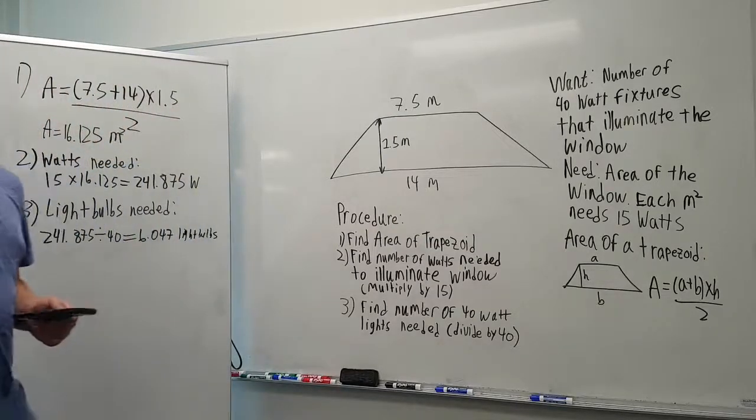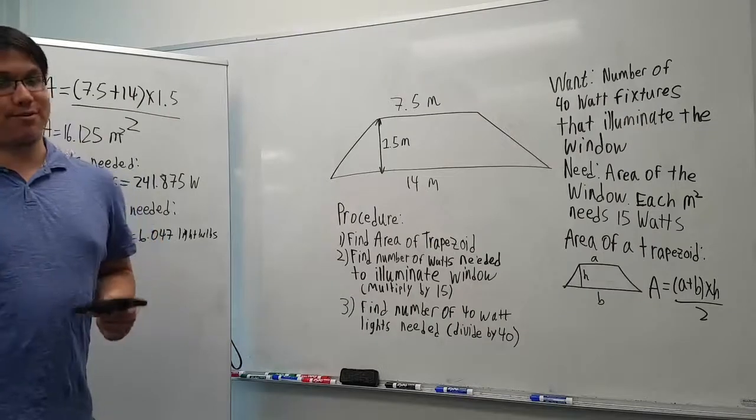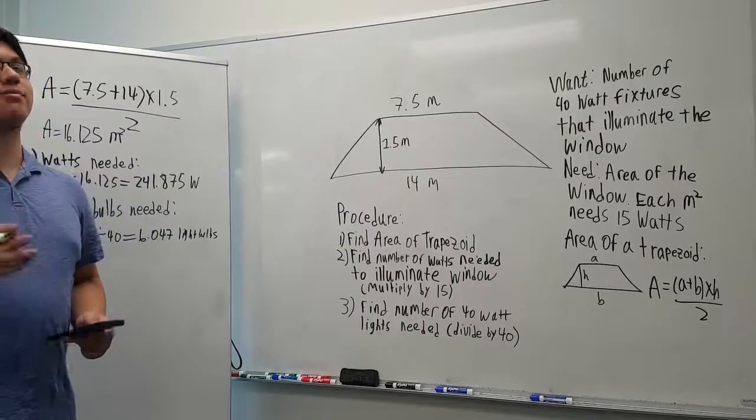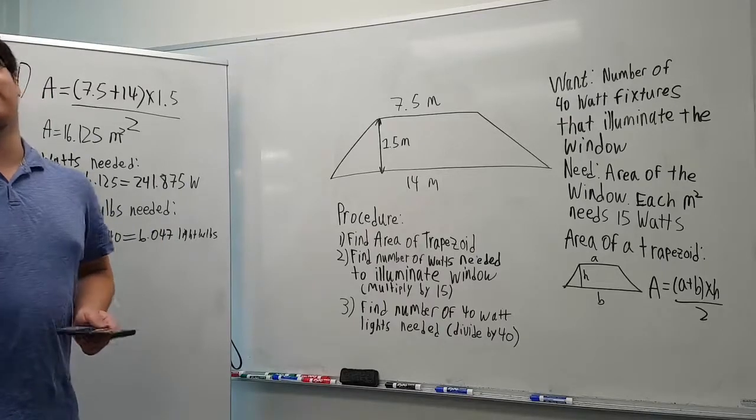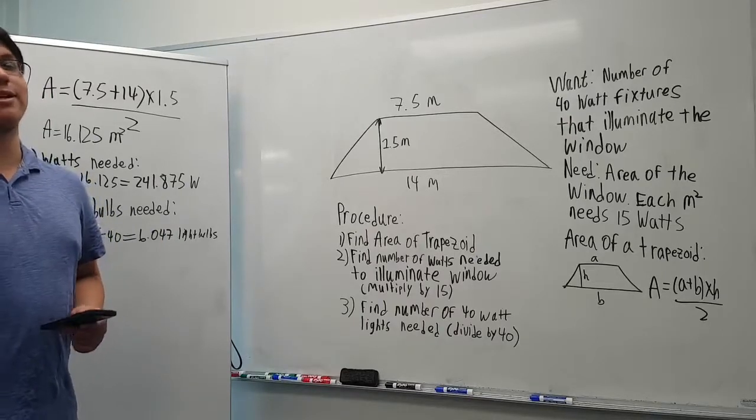But remember that in the context of this problem, we need whole numbers of light bulbs, so I'm actually going to round that up to 7 because we need complete illumination. Six light bulbs will not give complete illumination.